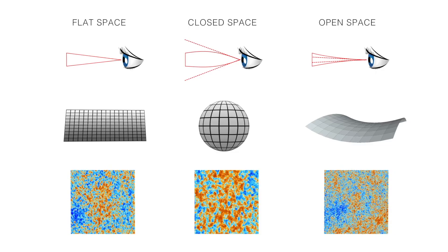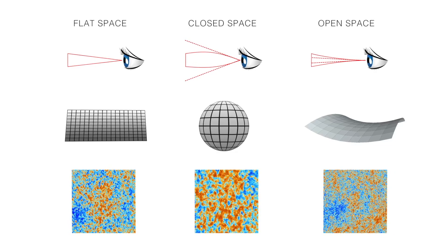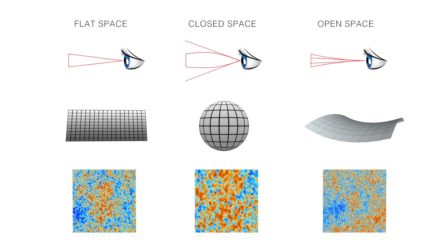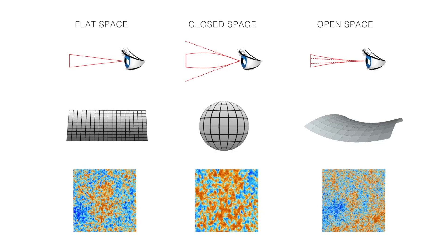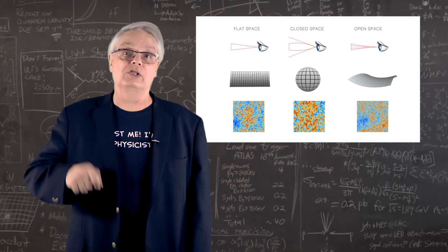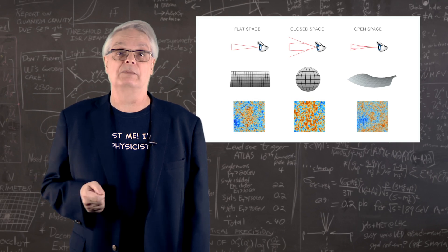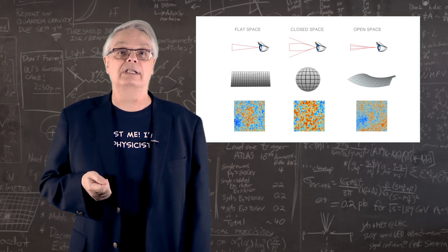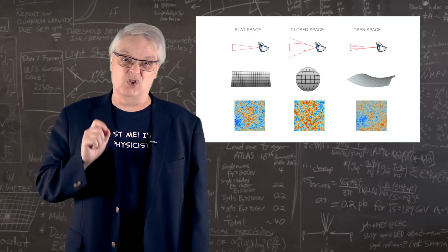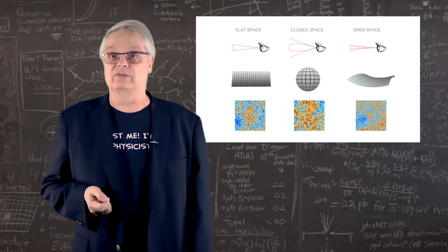That will make the apparent angle different from what happens in flat space and it will change the distance we see between adjacent spots. Bigger if space is spherical and smaller if space is saddle-shaped. That means measuring the angular distance between adjacent spots is a good way to determine the flatness of space.